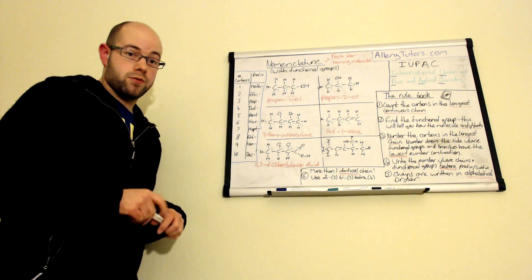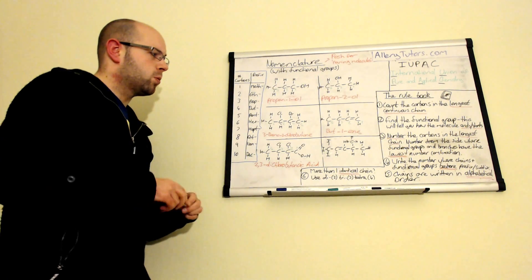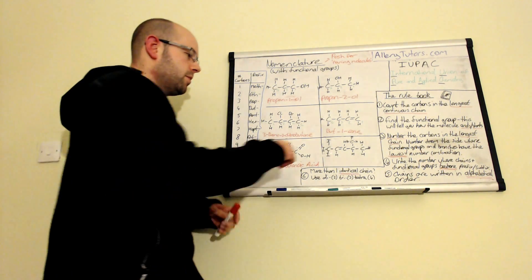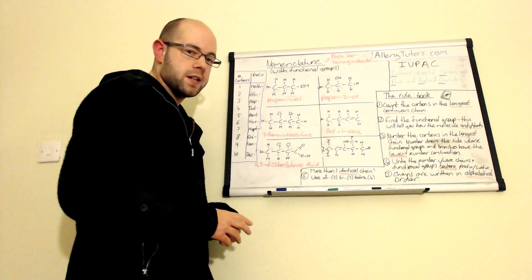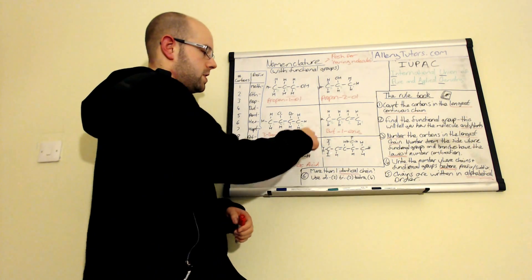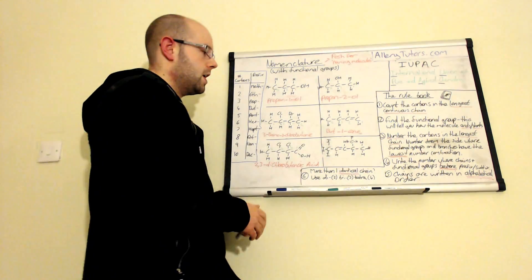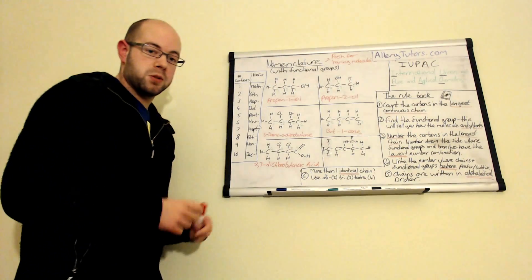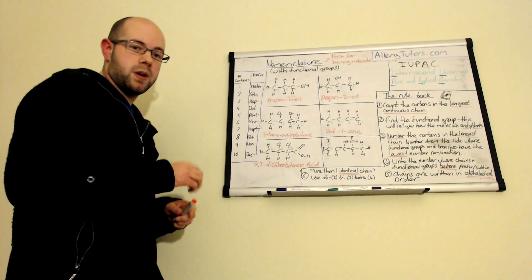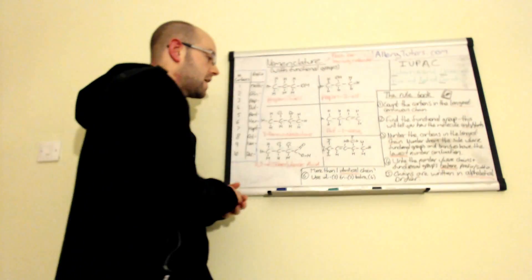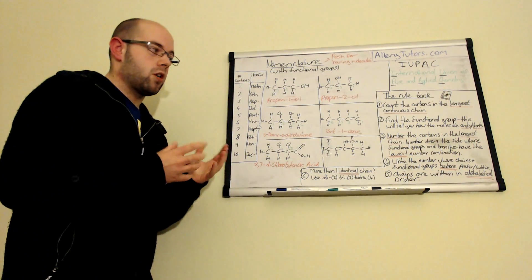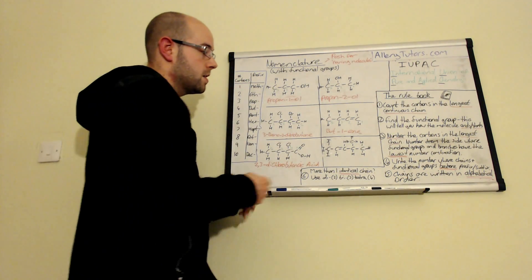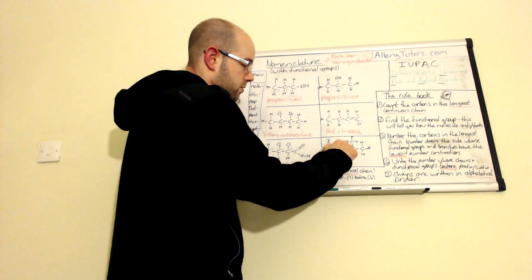The final example is even more tricky - there's a lot going on. We've got three iodines around the same carbon, we also have an alkene, and there's some branching as well - everything mixed together. You've got to be really careful when you've got ones like this. The first thing: count the carbons in the longest continuous chain. In this case we've got five carbons.